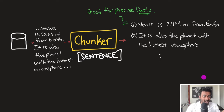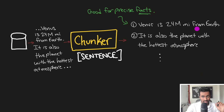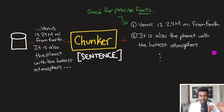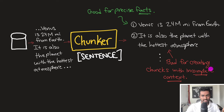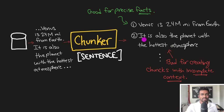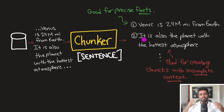One advantage of chunking by sentence is that it's good for getting very precise pieces of information, like 'Venus is 24 million miles from Earth.' But a negative is that it can create chunks with incomplete context. For example, 'It is also the planet with the hottest atmosphere' doesn't make much sense on its own — 'it' refers to Venus, but we don't know that since it's in an isolated chunk. If we were to vectorize this chunk, the full meaning won't be precisely encapsulated, which could be a source of hallucinations later on.